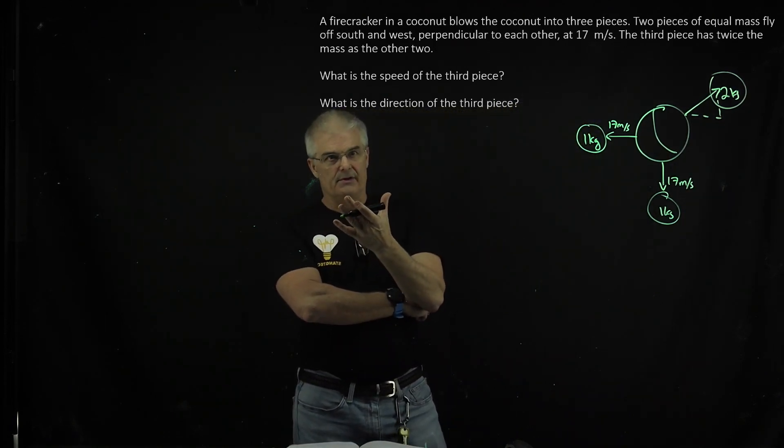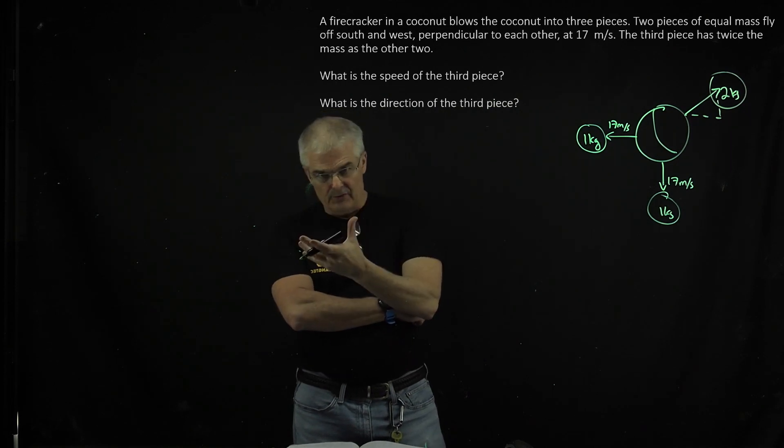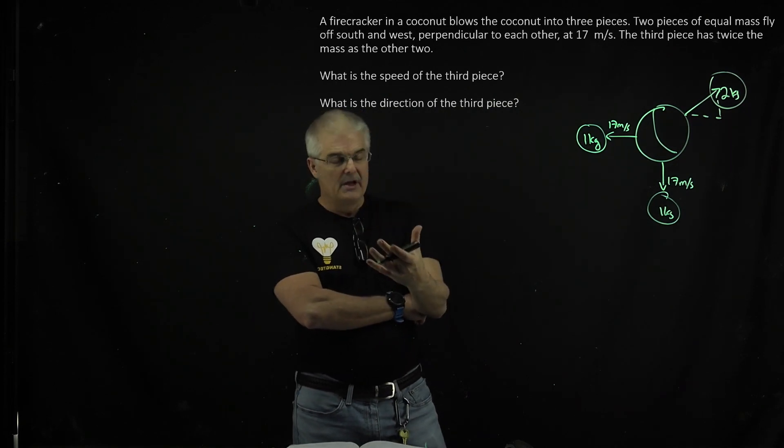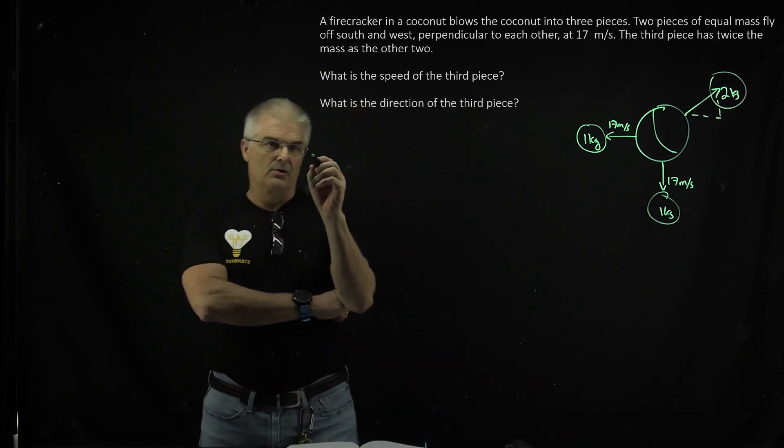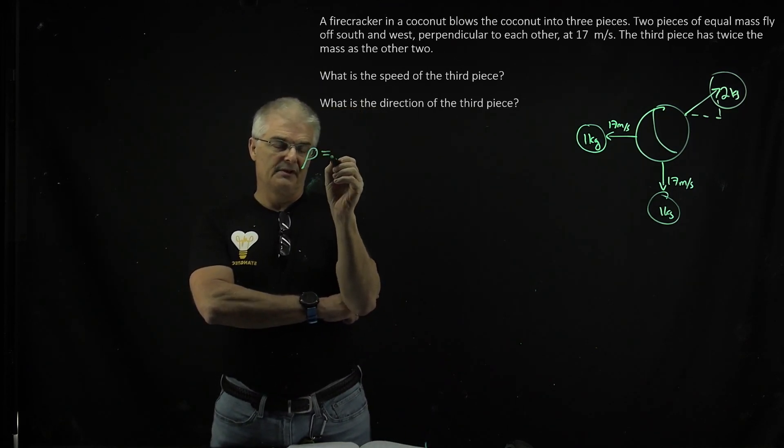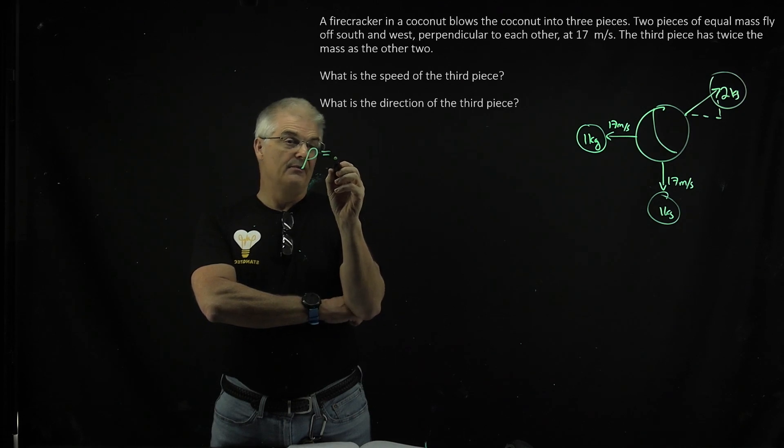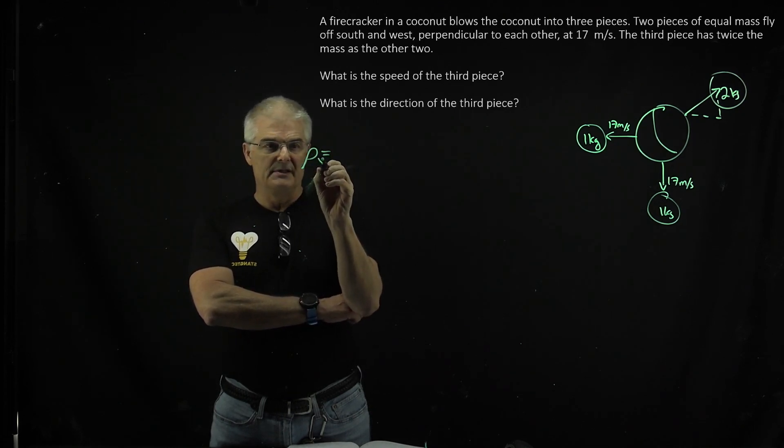So we're going to use the law of conservation of momentum that says the momentum before is equal to momentum afterward, but we break it down into its x and y components. So we're going to say momentum, which is this funny looking p, is going to be m before, but let's do the momentum in the x direction.